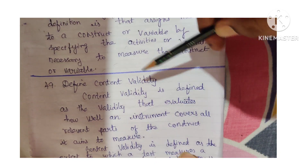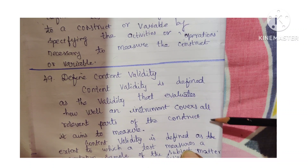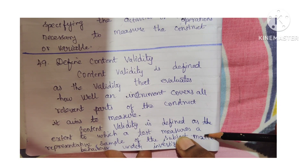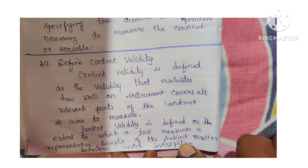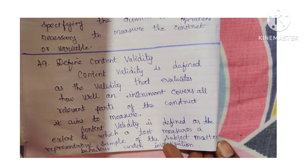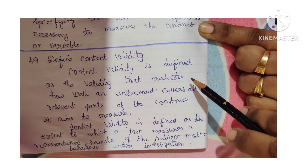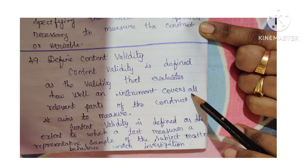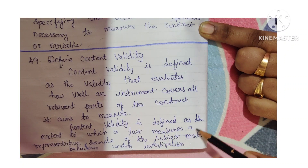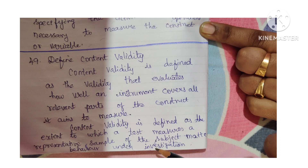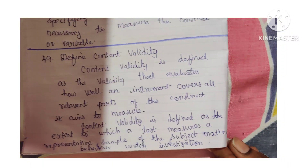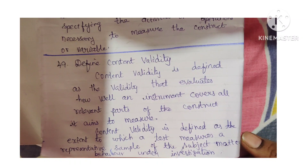Question 49: Define content validity. Content validity is defined as the validity that evaluates how well an instrument covers all relevant parts of the construct it aims to measure. Content validity is also defined as the extent to which the test measures a representative sample of the subject matter or behavior under investigation.